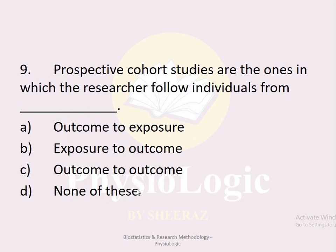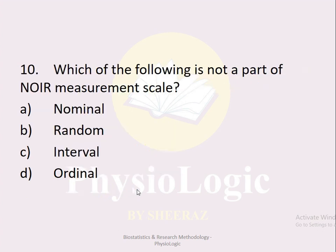MCQ number nine: Prospective cohort studies are the ones in which the researcher follows individuals from: outcome to exposure, exposure to outcome, outcome to outcome, or none of these. The correct option is option b, exposure to outcome, as discussed in previous MCQs.